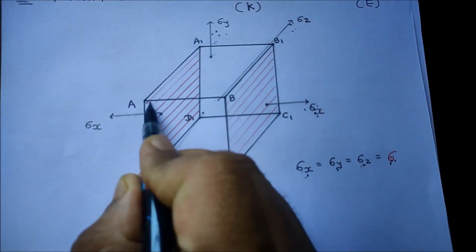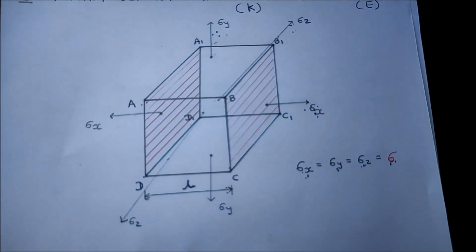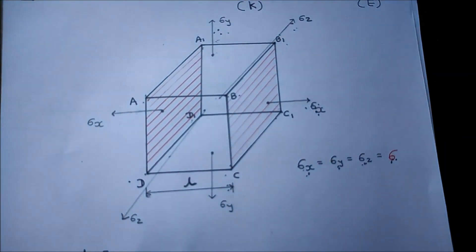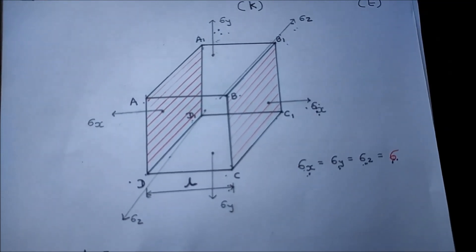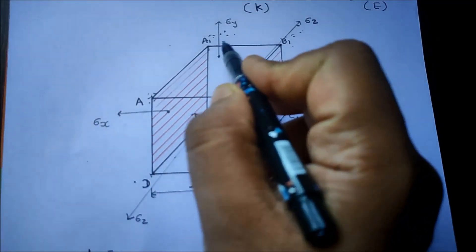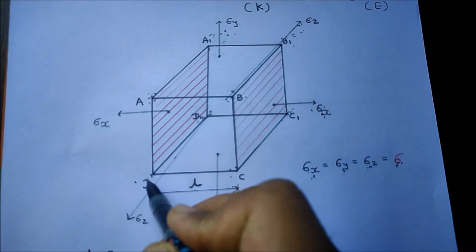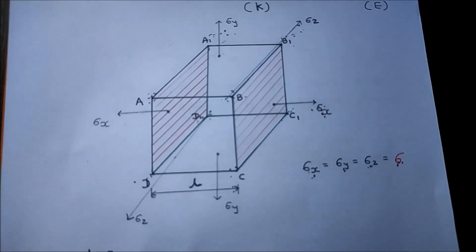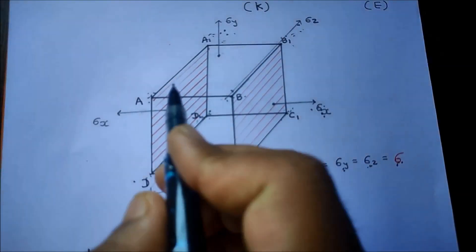Let us now consider the strain of one of the edges, say AB. Due to stresses on faces AA1B1D and BB1C1C, side AB of the cube will suffer compressive lateral strain equal to (1/m) multiplied by sigma by E. Similarly, due to stresses on faces AA1B1B and CC1DB1, side AB will again suffer compressive lateral strain equal to (1/m) multiplied by sigma by E.